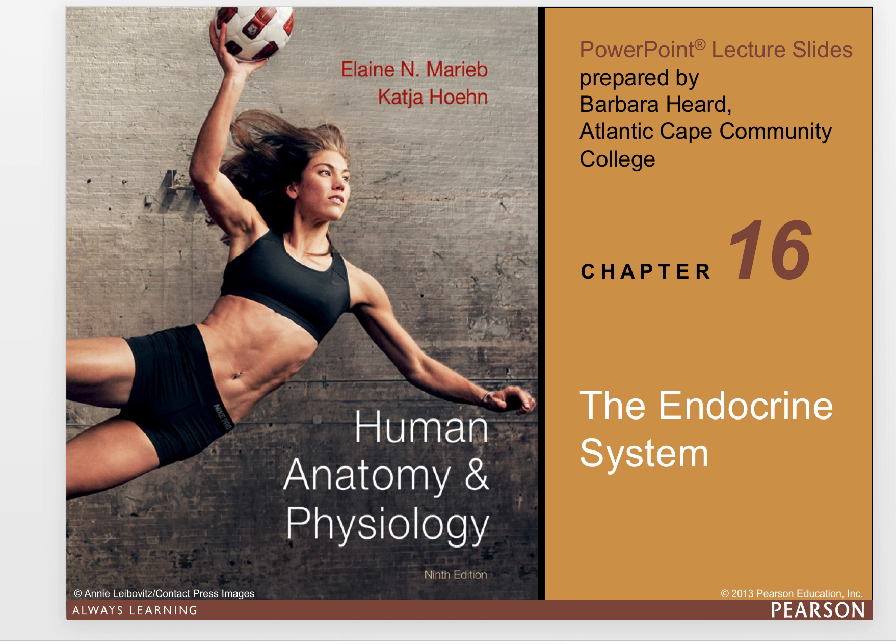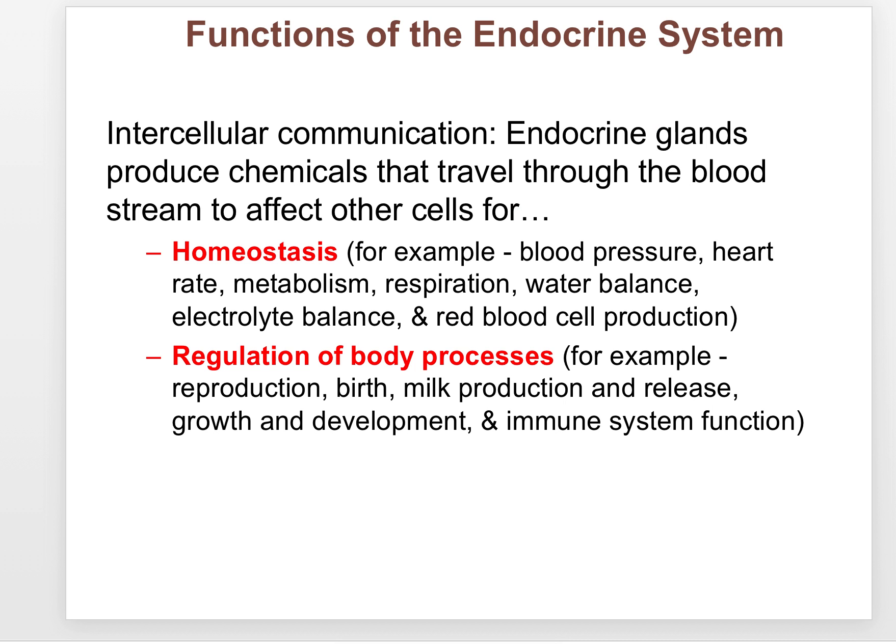The endocrine system's main function is communication — from one part of the body to another. Endocrine glands produce chemicals that travel throughout the bloodstream to affect cells at other locations in the body, and they are mainly used for homeostasis and to regulate body processes.